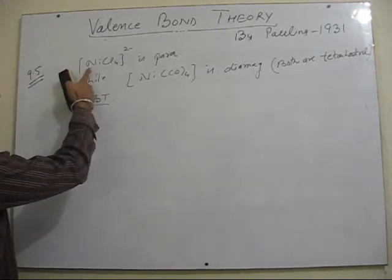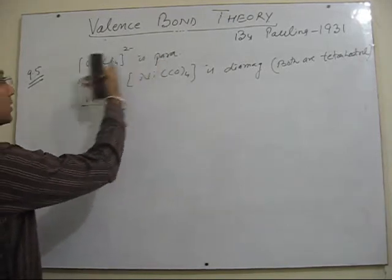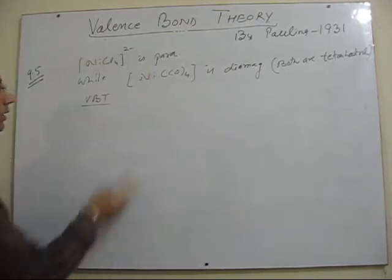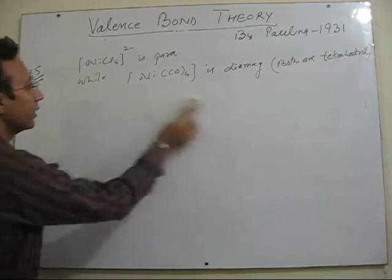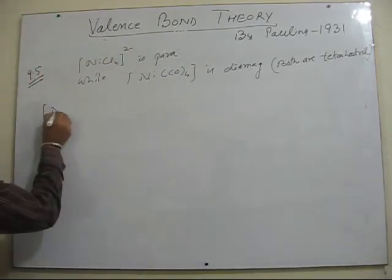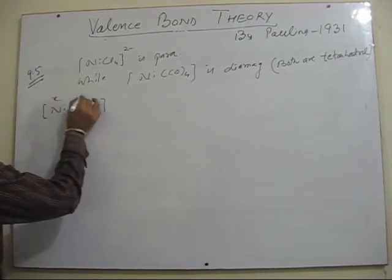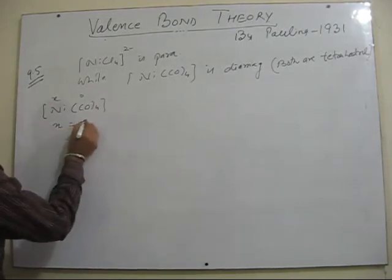I have already explained this case so I will not repeat this case. I have already explained that this is tetrahedral as well as paramagnetic. Let's take the second case here. So it is case of tetra carbonyl nickel.